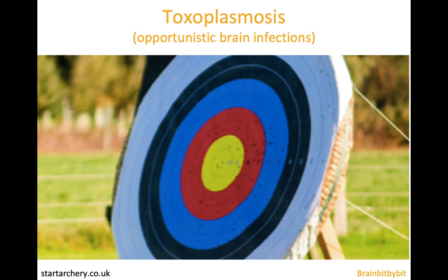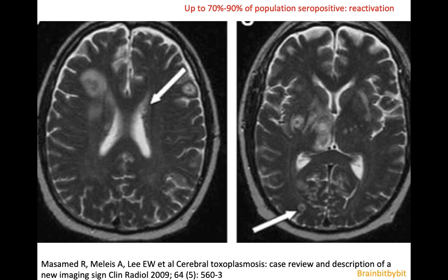In this brain bit by bit segment, I will not go into congenital toxoplasmosis infection that can happen when pregnant women eat raw meat or change the cat's litter box, but I will show images of toxoplasmosis as an opportunistic infection in patients with HIV. Toxoplasmosis is very common, and a large part of the population has this parasite as a latent infection.